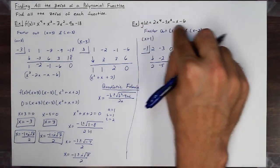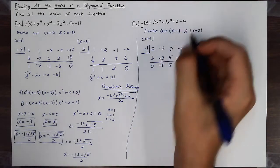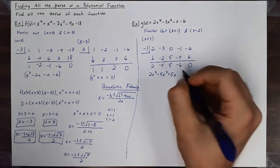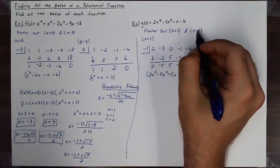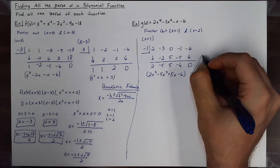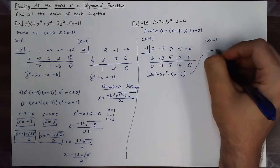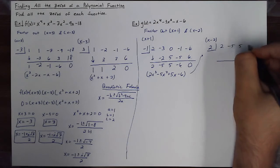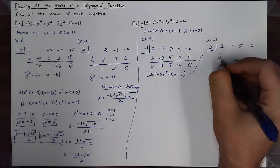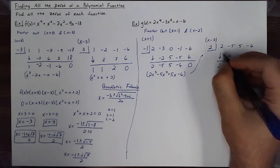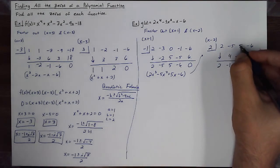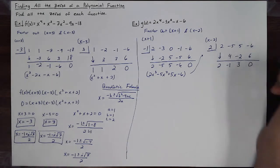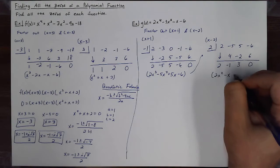Factoring out (x+1) from 2x⁴ - 3x³ - x - 6 leaves me with 2x³ - 5x² + 5x - 6, which I'm now going to factor (x-2) out of. I'll put 2 in the box with coefficients 2, -5, 5, -6. Carry the 2 down. 2 times 2 is 4; -5 plus 4 is -1. 2 times -1 is -2; 5 plus -2 is 3. 2 times 3 is 6; -6 plus 6 is 0. That also is a factor, leaving me with 2x² - x + 3.